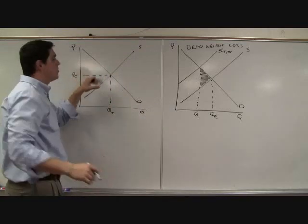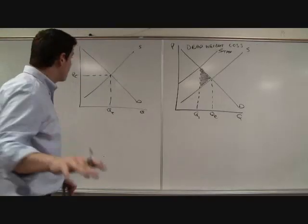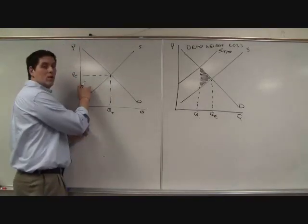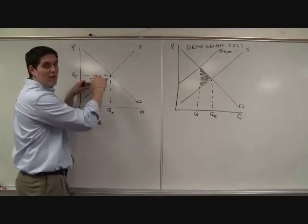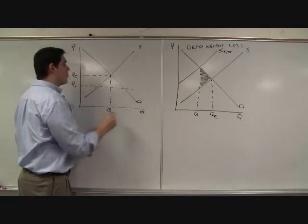Consumer surplus, producer surplus. Efficient market. But the government comes in with a price ceiling. A price ceiling is going to go below equilibrium. And the reason why, it's keeping the price from going to equilibrium. So let's say P1, boom, boom, boom. Here's your price ceiling. Price ceiling.